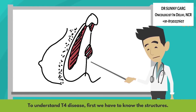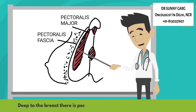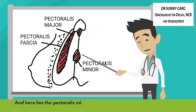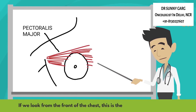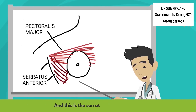To understand T4 disease, first we have to know the structures. Deep to the breast, there is pectoralis fascia and pectoralis major muscle, and here lies the pectoralis minor muscle. Other structures in the chest wall include ribs and intercostal muscles. If we look from the front of the chest, this is the pectoralis major muscle, and this is the serratus anterior muscle.